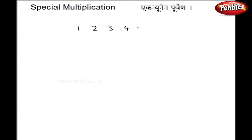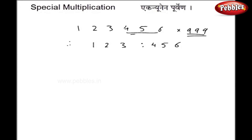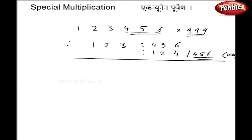Let me take another example to make it more clear: 123456 multiplied by 999. So 123 is on the left hand side and 3 digits — 456 — on the right hand side, because we have three 9s in the multiplier. I add 1 to the left hand side to get 124, and 456 comes as it is. Since there are 3 digits, I subtract from 1000. Using Nikhilam, subtracting 456 from 1000 gives 544 — all from 9 and last from 10. The rest of the calculations give 2, 3, 3, 3, 2, 1.